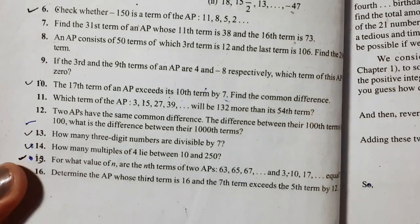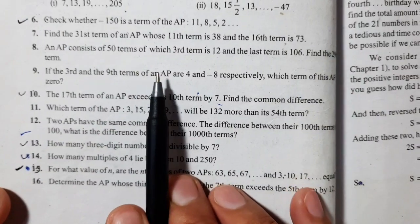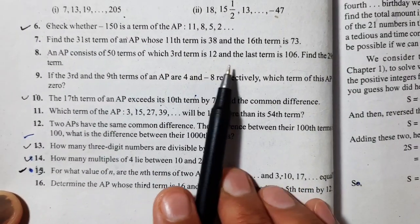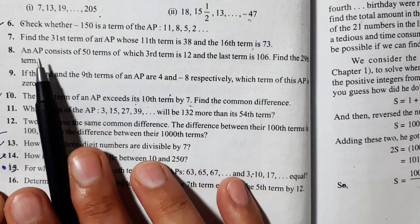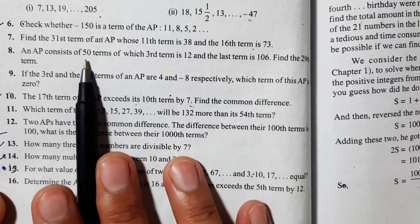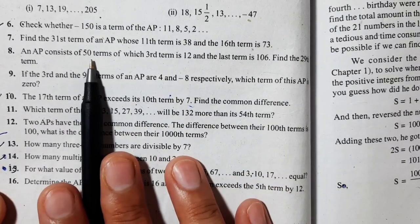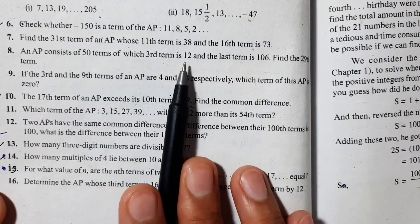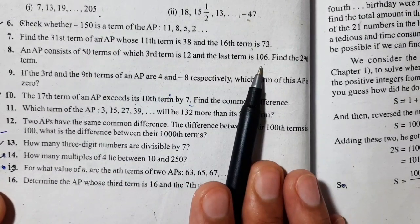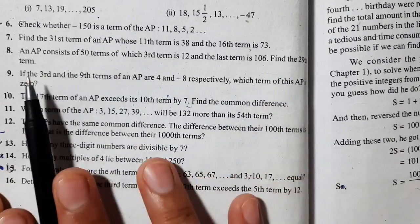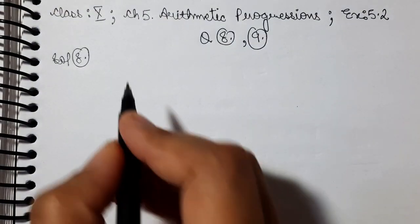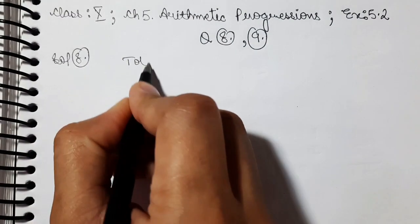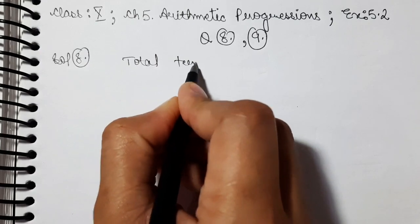First, we will see question number 8. It is: an AP consists of 50 terms of which the 3rd term is 12 and the last term is 106. Find the 29th term. We have here an AP which has a total of 50 terms, the third term is 12, the last term is 106, and we need to find the 29th term.